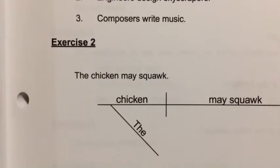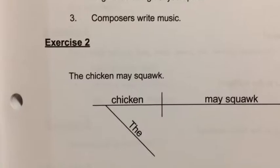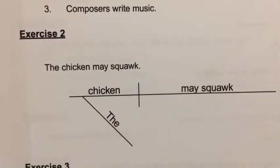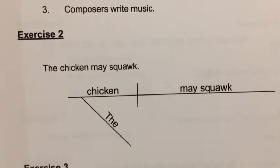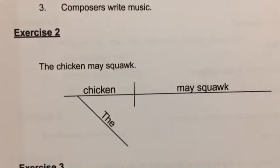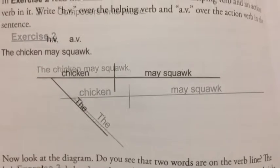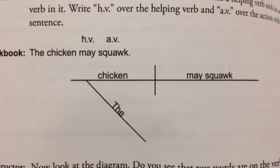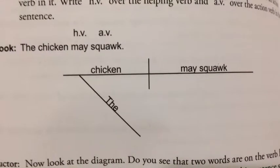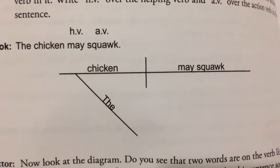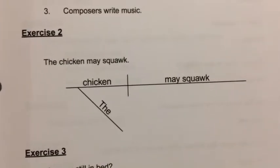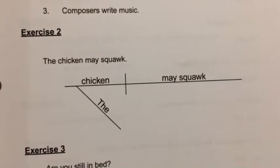Let's look at exercise two together. This sentence has a helping verb and an action verb. I want you to write an HV over the helping verb and an AV over the action verb. You should have something that looks like this — HV over the word may, because it's the helping verb. Squawk is your action verb, so put an AV over squawk. Look at the diagram — just like in class, we diagram may with squawk, both on the verb line.